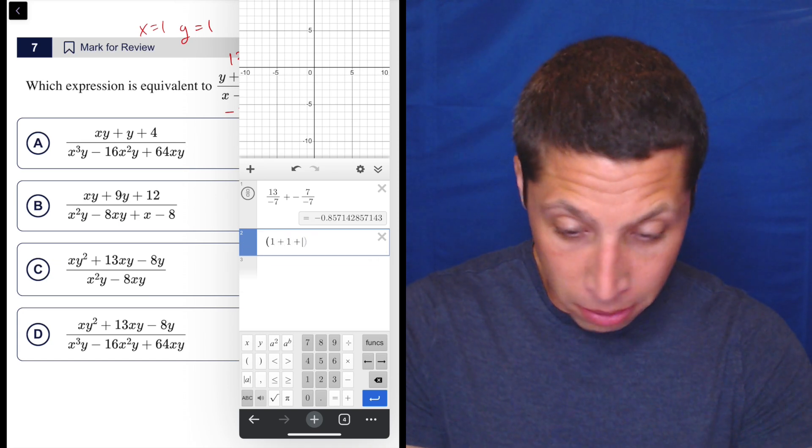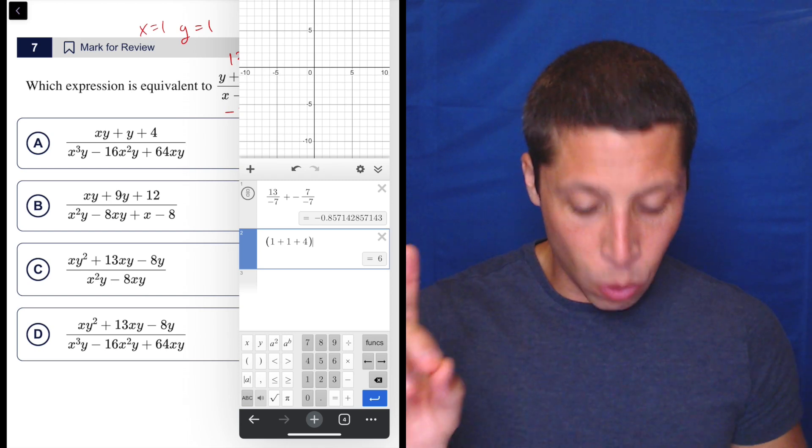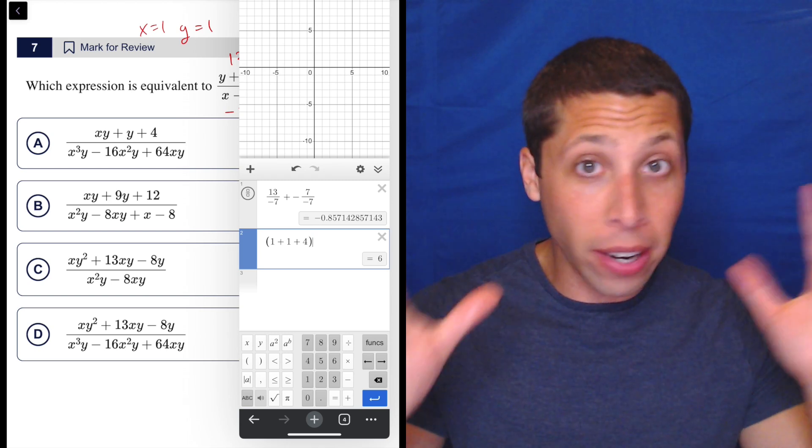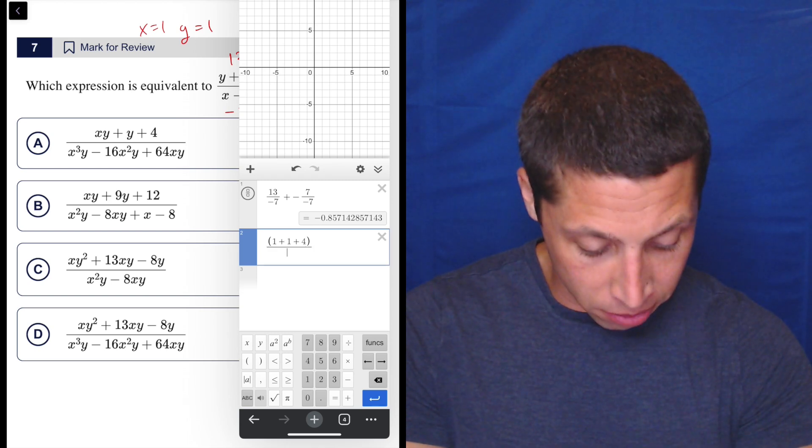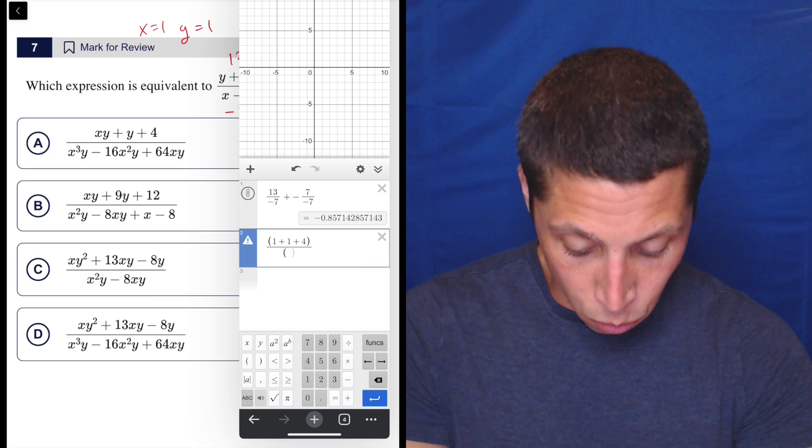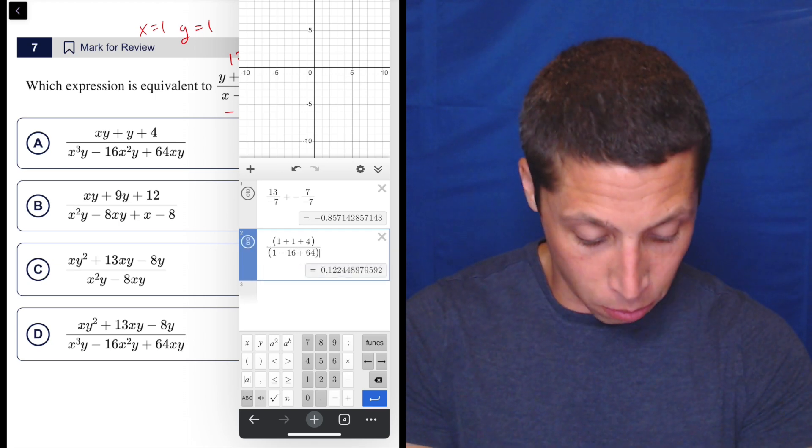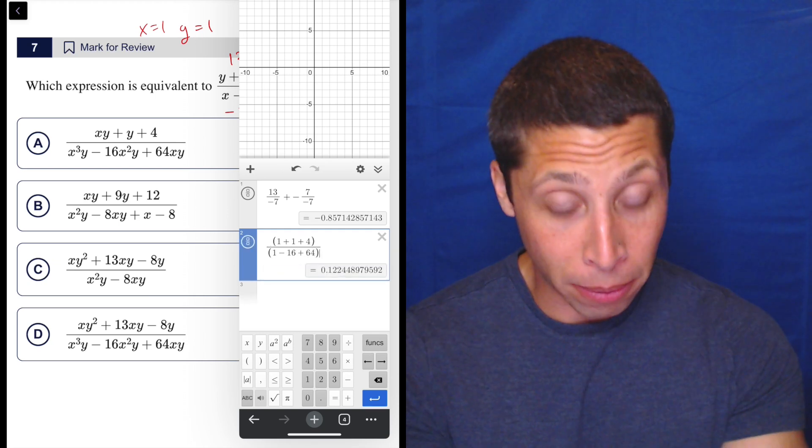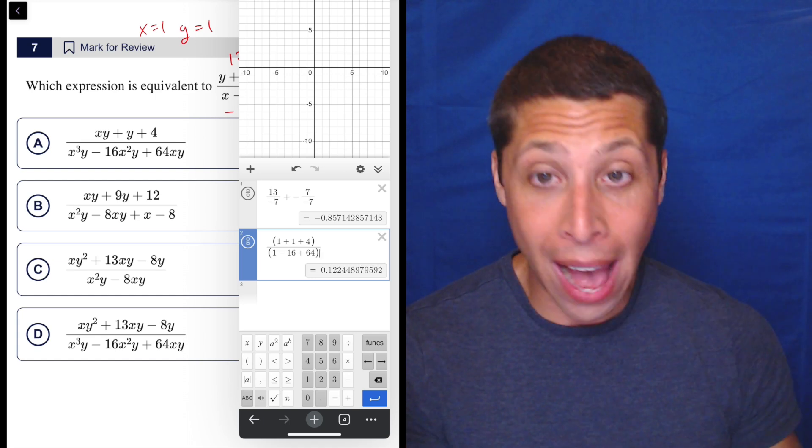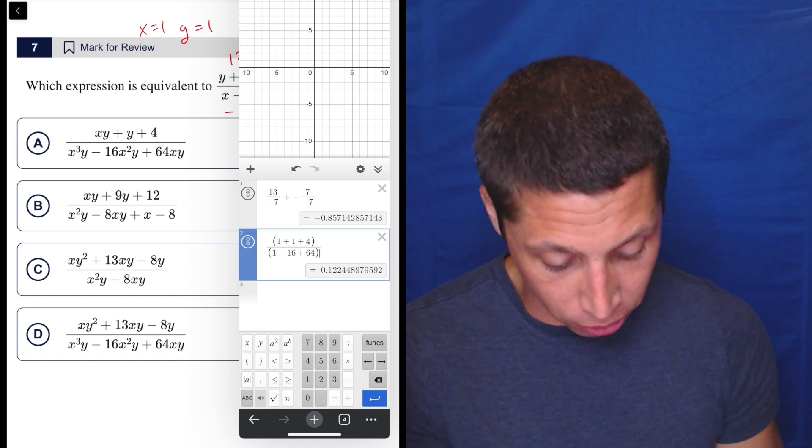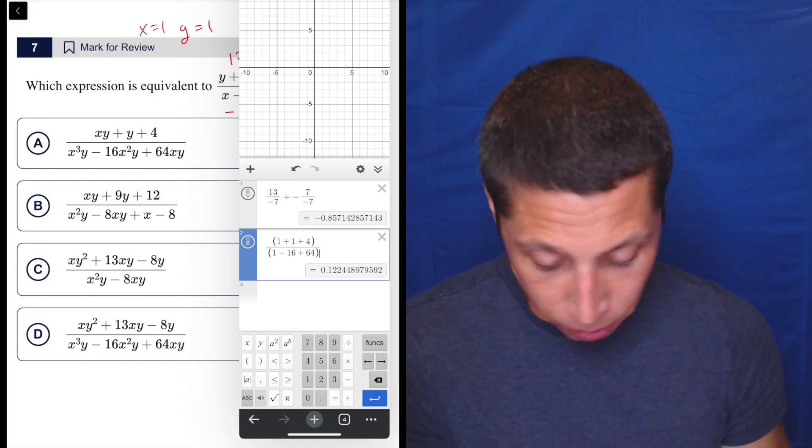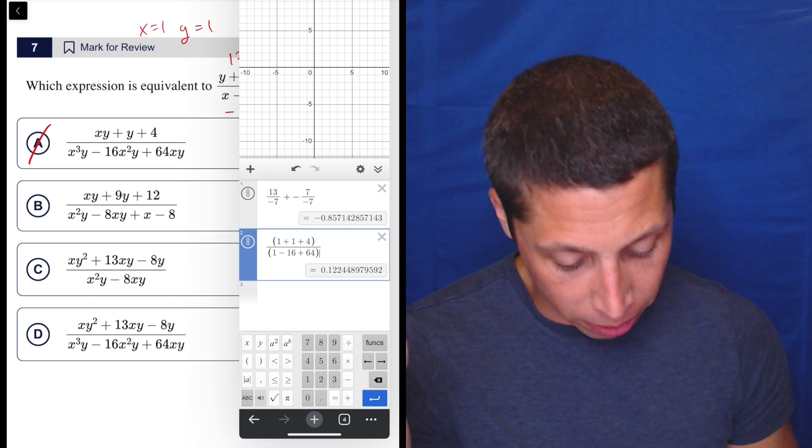One plus one plus four. I'm putting one in for both X and Y. So it's very easy for my brain to handle. And then I'm dividing that by one minus 16 plus 64. Different number. Seems bad, seems wrong. So it's 0.122. I think I did everything right. So we're going to cross that out and we're going to move on.